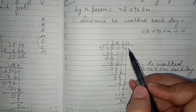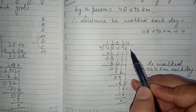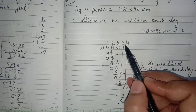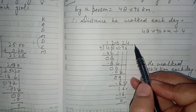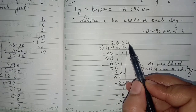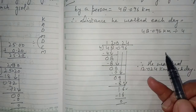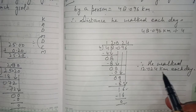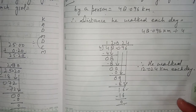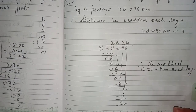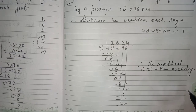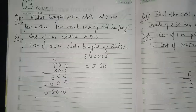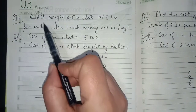Count from the right side three digits and put the decimal before them. Therefore he walked 12.024 kilometer each day. In total in four days he covered 48.096 kilometer. This is the distance he walked each day.